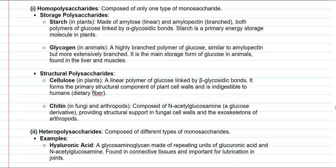Chitin is mainly composed of a glucose derivative called N-acetylglucosamine, which is the basic monomeric unit that builds this polysaccharide. It provides structural support, serving as a cell wall in fungi and as the exoskeleton of arthropods such as crabs.